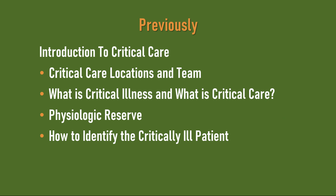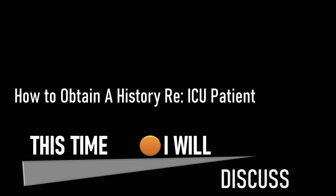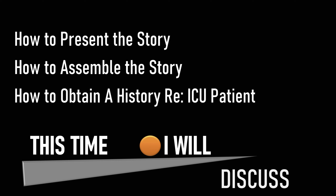Welcome back. This is a series of tutorials that serves as an introduction to critical care. Previously I discussed critical care locations and the critical care team, what is critical illness and what is critical care, the concept of physiological reserve, and how to identify the critically ill patient. In this tutorial I will discuss how to obtain an ICU patient's history. It may seem obvious, but if you're working in the ICU it is imperative that you know the patient's story — not just today or yesterday, but the whole story, and that may be going on for months and may be full of nuance. You need to be able to take the information and assemble that story so that you can present the patient on rounds, during handover, or during patient discussions.